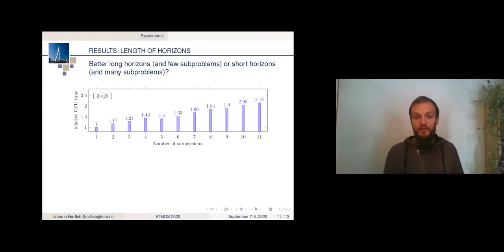So we did some experiments with this on randomly generated instances of different sizes. In the top-left corner of the graph, you can see written Z equals 20. That means we have 20 zones in this instance, and on the x-axis, you have the number of sub-problems, and on the y-axis, the relative CPU time. So when solving several of these instances with 20 zones at once, that means with just one sub-problem, so we don't really use the rolling horizon heuristic there, we just solve it at once, the relative CPU time is 1.